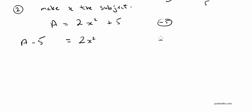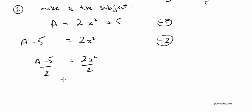Now, good idea to get rid of that times 2. The inverse of multiplying by 2 is dividing by 2 — to undo it. So I divide both sides by 2. On the left side, 2x squared divided by 2 gives 1x squared. On the right side, a minus 5 divided by 2 stays as it is, because I don't know the value of a. So 2 divided by 2 is 1, leaving just x squared on the left.